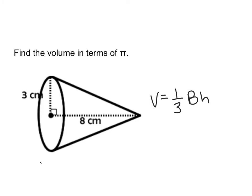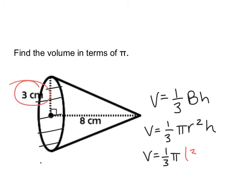If you don't need to write the one-third Bh, that's fine. You can jump right into one-third πr²h. Because remember, my base is a circle, so I'm using the area formula of a circle. I look at my image, I have my one-third, I have my π, and I see that my radius is 3, so I put that in for r.